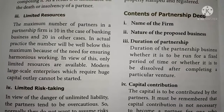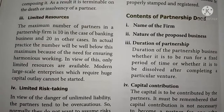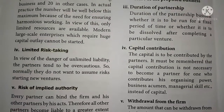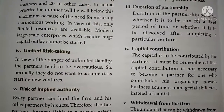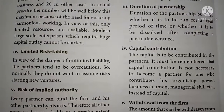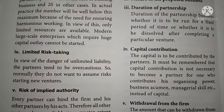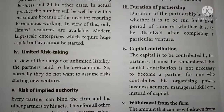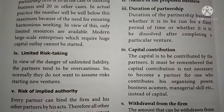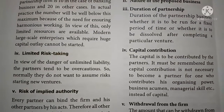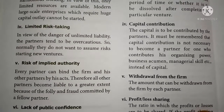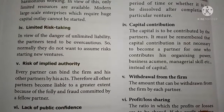The duration specifies how long the partnership firm will run — the time duration should be mentioned in the partnership deed. Then, capital contribution: the amount contributed by each and every partner in the partnership firm should be mentioned in the partnership deed. Each and every partner should contribute their capital in the partnership firm and that amount should be stated in the agreement.